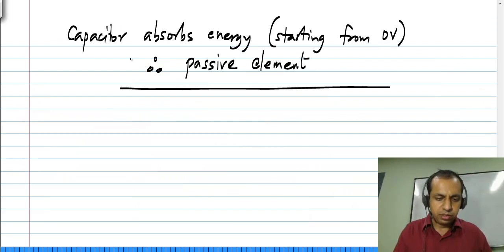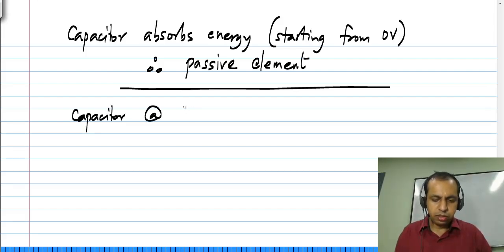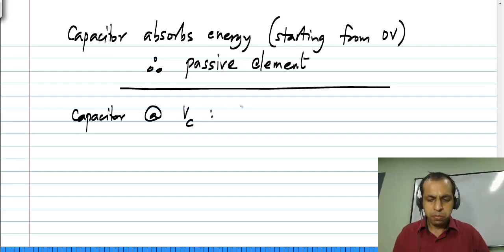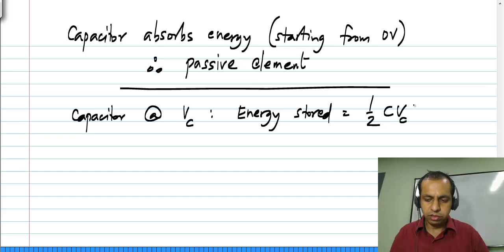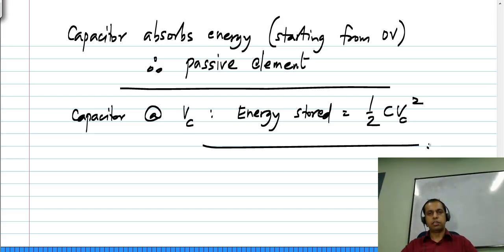To summarize: a capacitor at a voltage Vc has an energy stored in it equal to half C Vc squared.